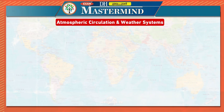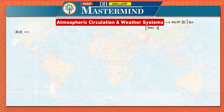Hello everyone, welcome to Mastermind. In this video let us discuss about atmospheric circulation and weather systems. This is a very important chapter from NCERT class 11. A lot of questions in UPSC and KPSC have been coming from atmosphere-related aspects and weather systems, important for geography in both prelims and mains. This will be part one, so let us start from the very basics.